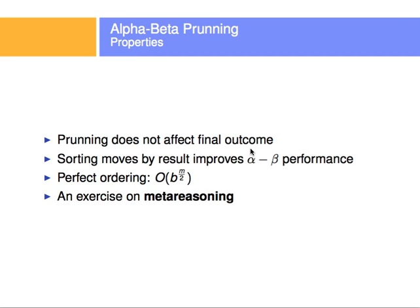Sorting the moves by results might improve the alpha beta performance. And with the perfect ordering, we get an order of running time of B, of the branching factor of the tree, in our case 3, because each tree had 3 branches, to the M half. M is the number of levels in the tree. This is a lot better than depth-first search, which does B to the M. We call this meta-reasoning.